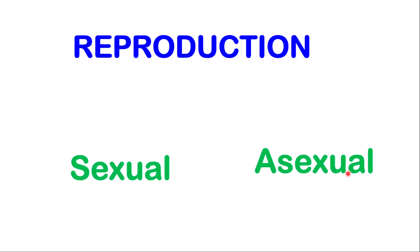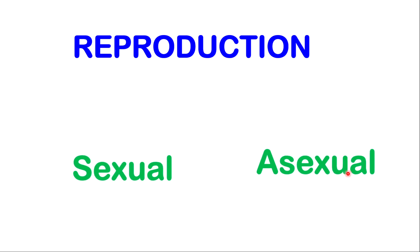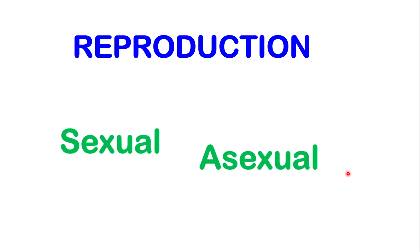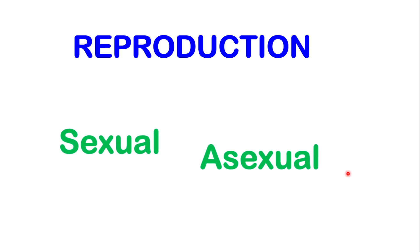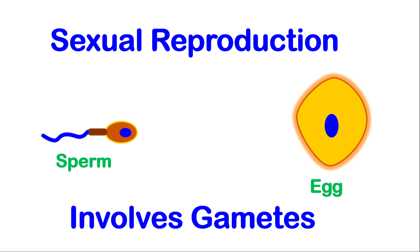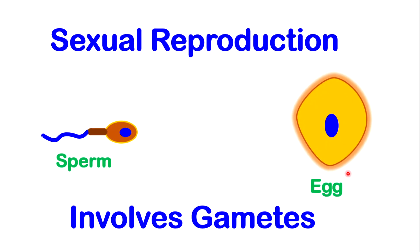Today, we are going to look at the differences between sexual and asexual reproduction. We will start with sexual reproduction first.